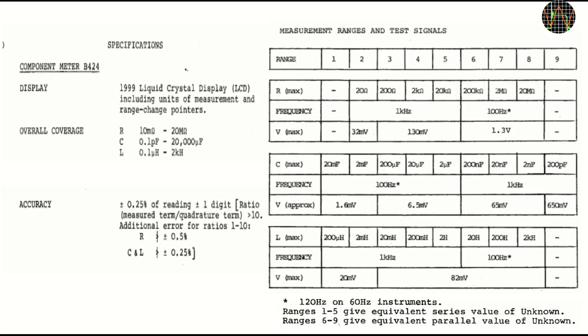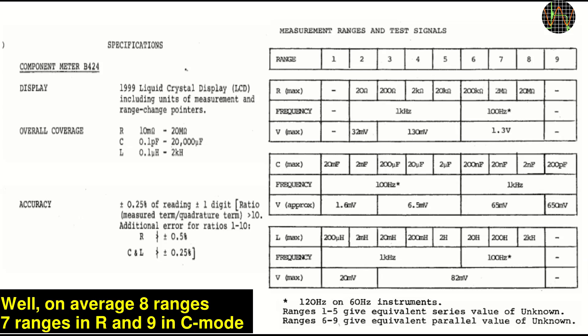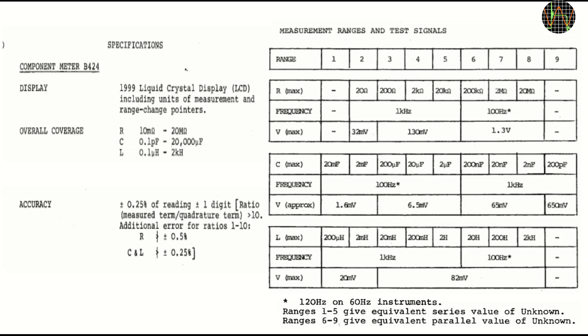The specs are not too bad. It covers the range of 10mΩ to 20MΩ, 0.1pF to 20mF and 0.1μH to 2000H with generally 0.25% accuracy. There are 8 ranges and the table shows for each type of measurement what frequency and voltage is used. The switching of frequency and test voltage is automatic with no manual intervention.